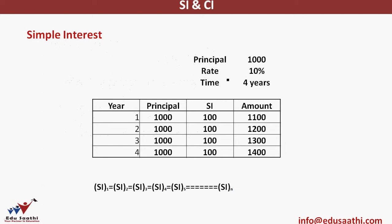Let's take an example: I started with 1000 rupees at 10% per annum for four years. Year one — 10% on 1000 gives interest of 100 rupees, so the amount at end of year one is 1100. In year two, the principal is still 1000 for simple interest — though 1100 is in the account, interest is calculated on 1000 only. Since principal and rate don't change, simple interest for year two is still 100.